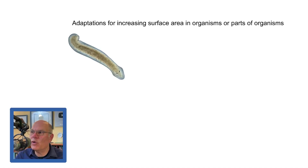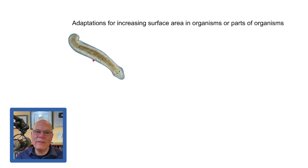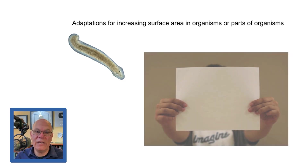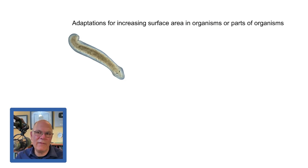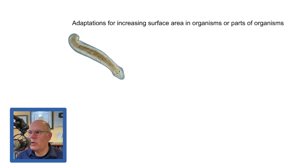Let's look at some adaptations for increasing surface area. One strategy is to just be flat. The planarian is extraordinarily flat — flat things have a lot of surface area relative to their volume, like a piece of paper. Planarians don't have a circulatory system, no heart, no blood. They have a digestive system, but food just diffuses to their cells — it's all about diffusion.